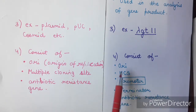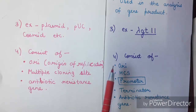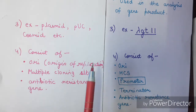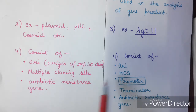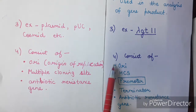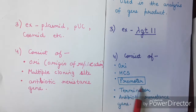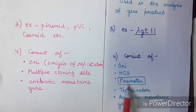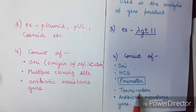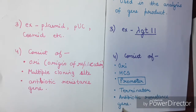The expression vector also consists of an origin of replication, multiple cloning sites, and a promoter. The promoter is present in the expression vector for the expression of the desired gene. We also need a terminator to terminate that synthesis, along with an antibiotic resistance gene.